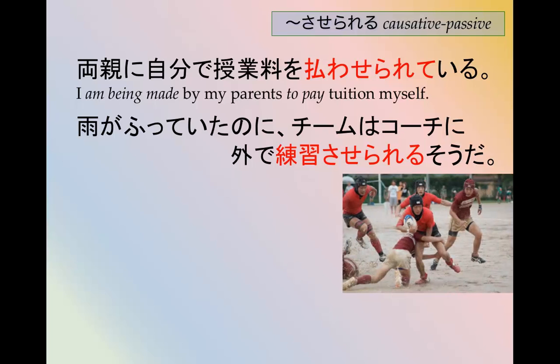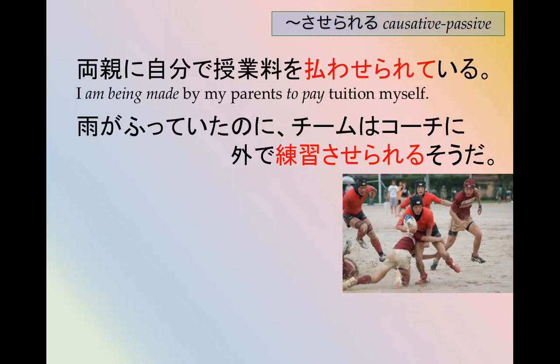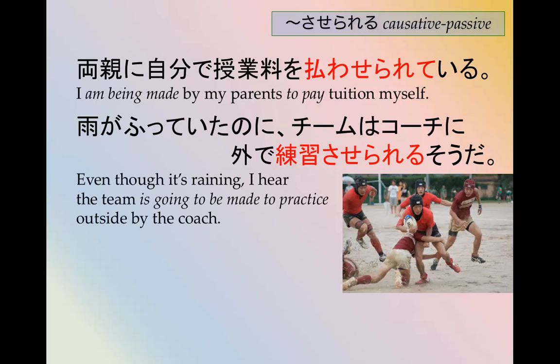Another example: 雨がふていたのに、チームはコーチに外で練習させられるそうだ。 練習させられる means 'to be made to practice.' Even though it's raining, I hear the team is going to be made to practice outside by the coach. The first clause, 雨がふていたのに, means 'even though it was raining.' のに means 'even though.'